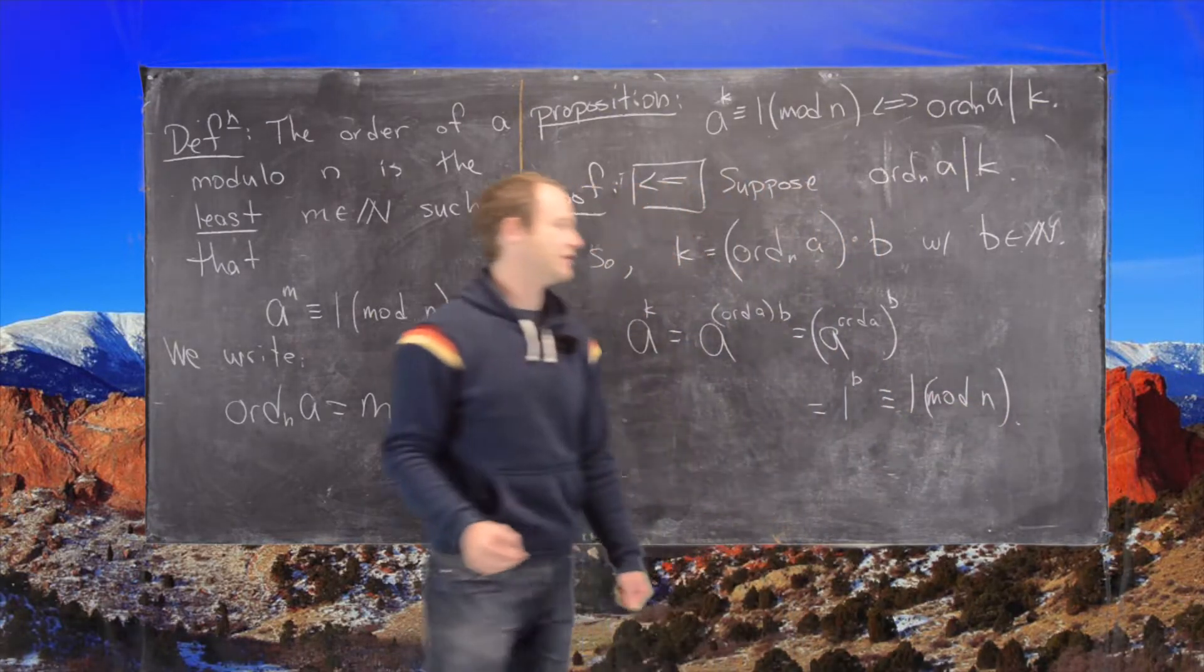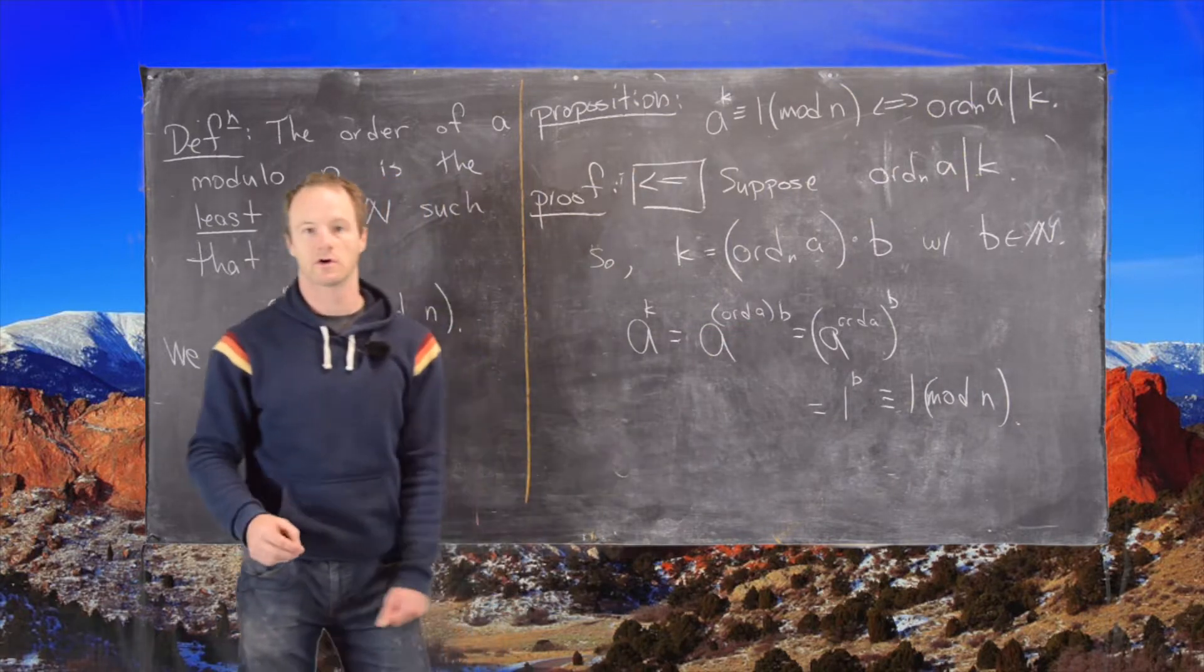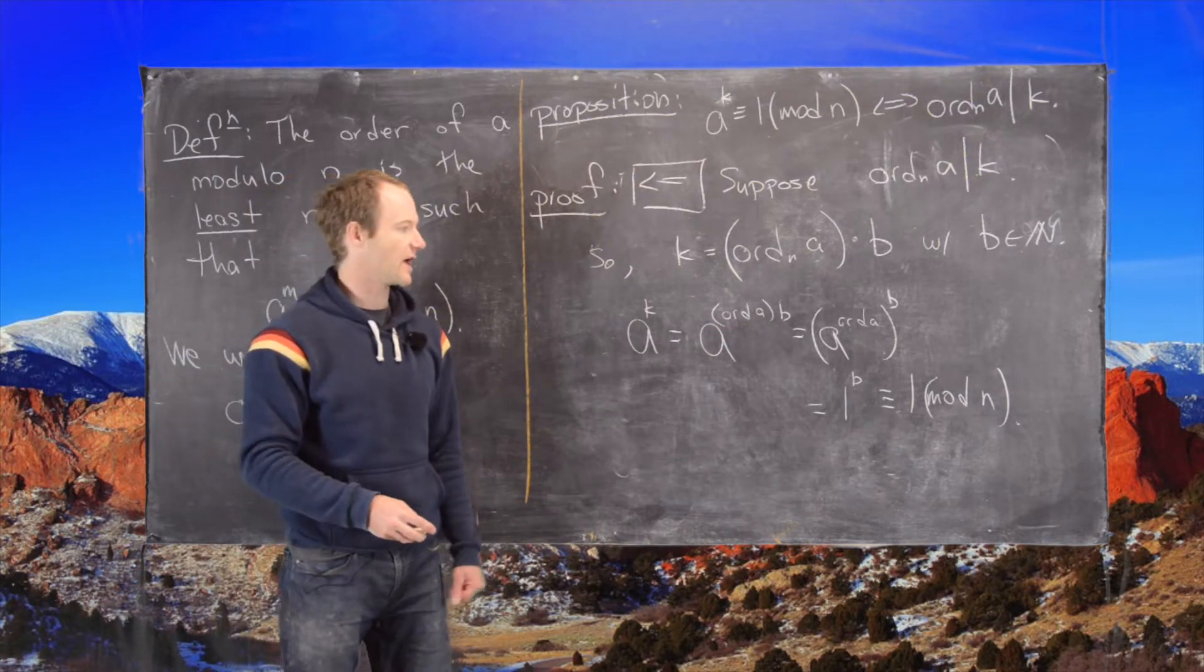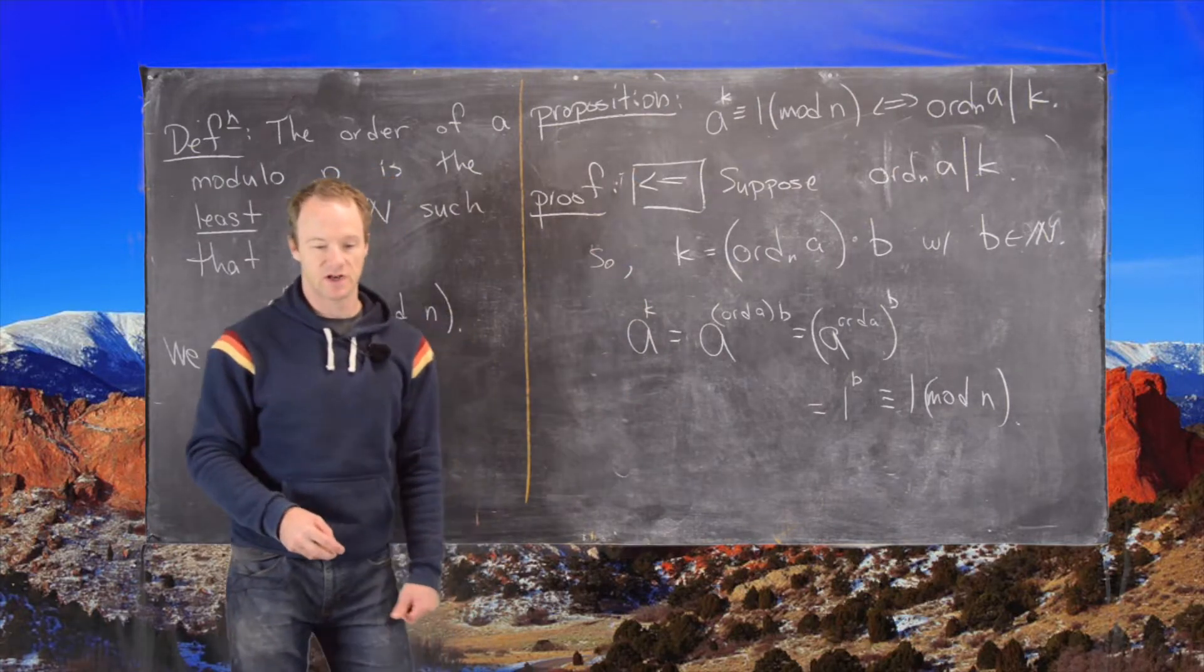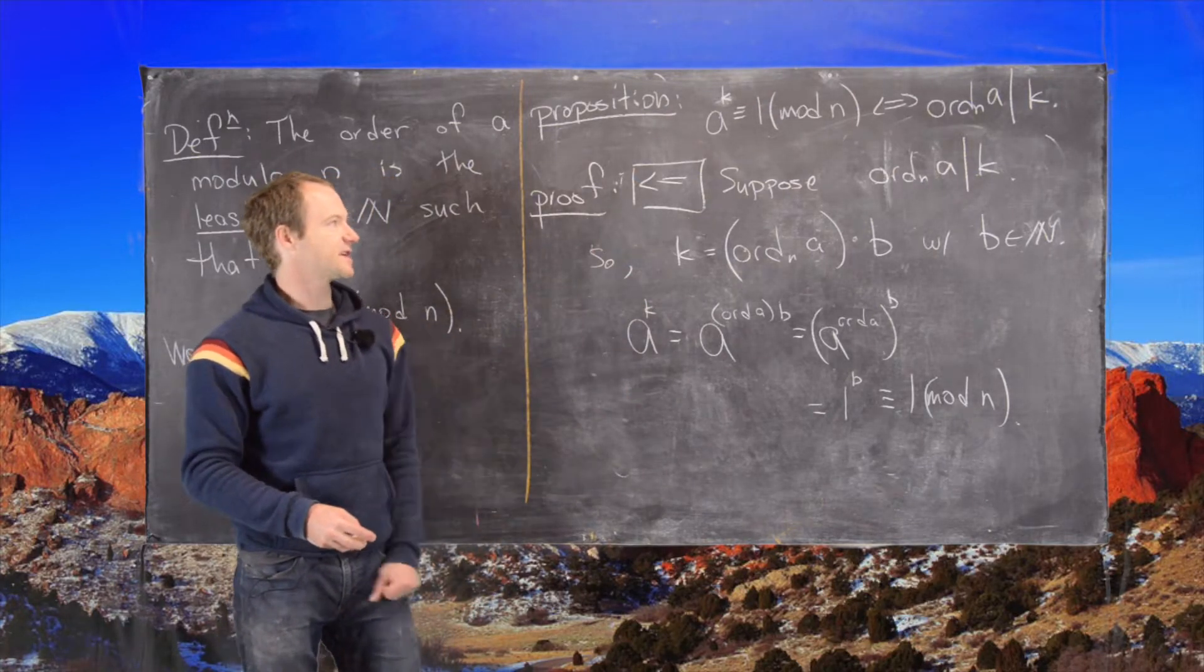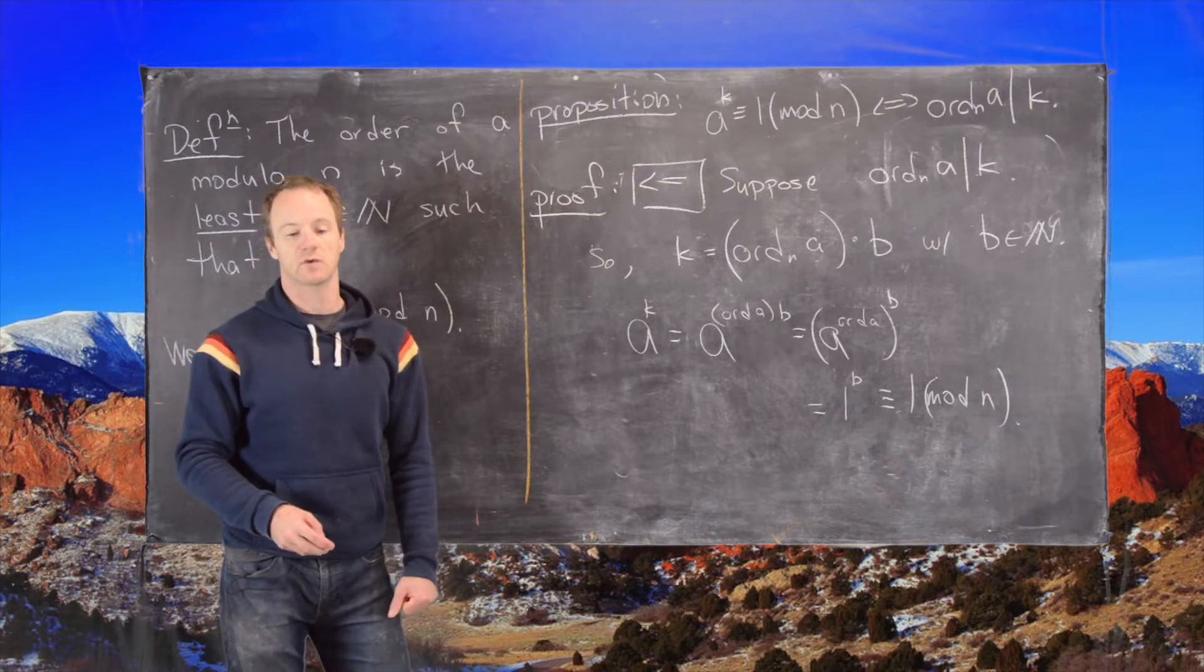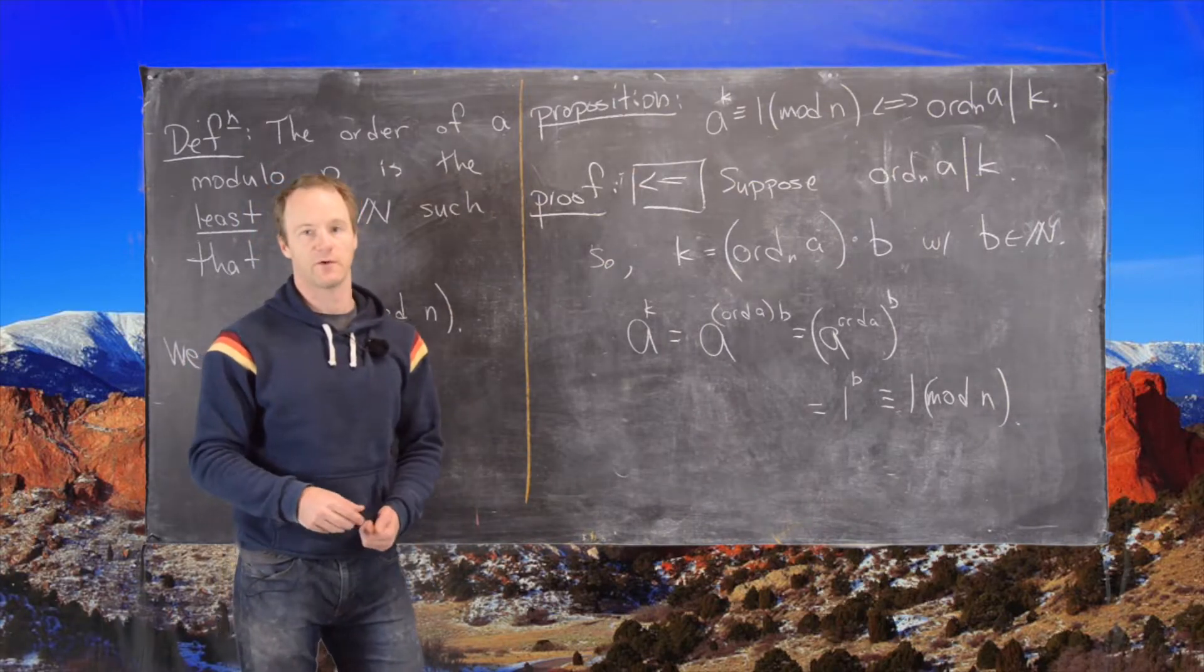Good. And we've used the fact that a to the order of a must be 1. That's how we define the order of a. Okay. Good. So we finished the proof of this proposition. So I want to erase the proof and then look at a corollary real quick before the end of the video.